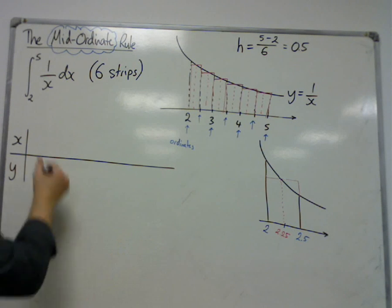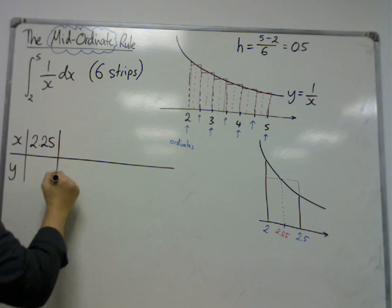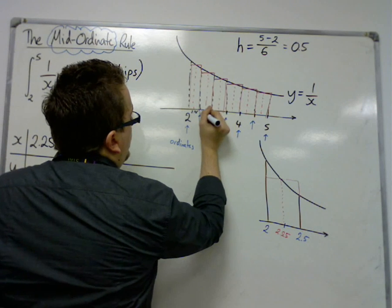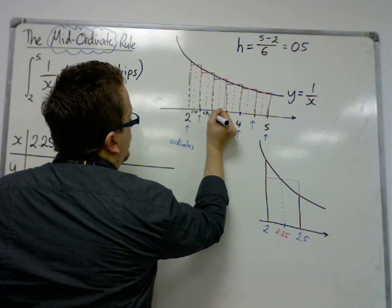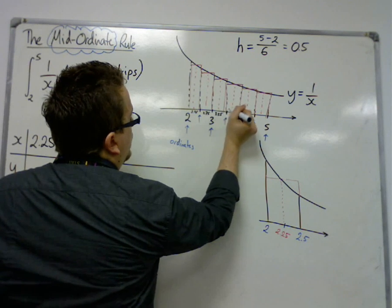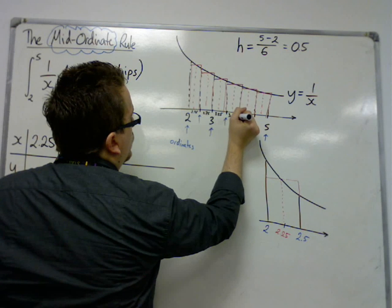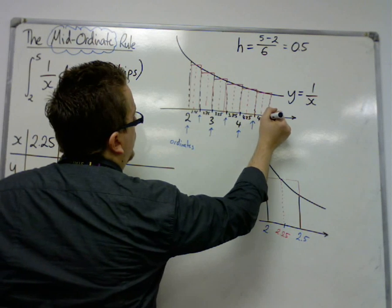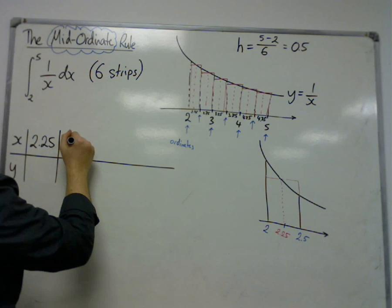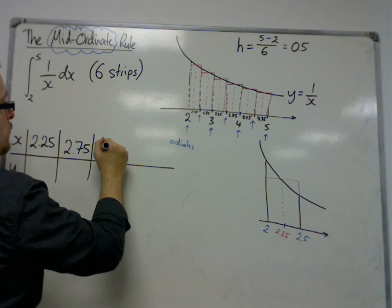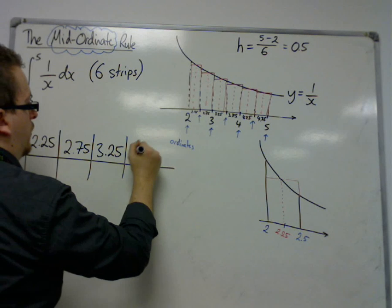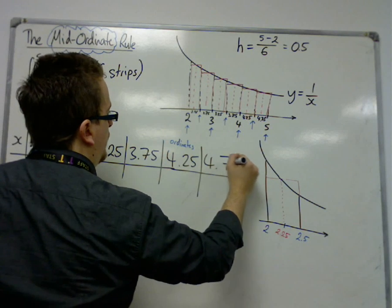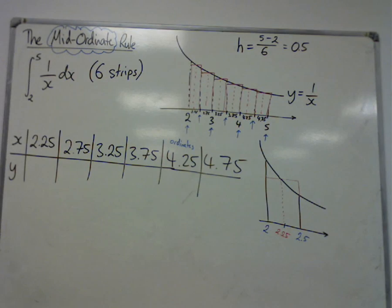Now the x's are going to be your mid-ordinates. We know the first one was 2.25. The next one, if that's 2.25, this is 2.5, so that's 2.75. That's 3, so that's 3.25. That's 3.5, so that's 3.75. That's 4, so that's 4.25. And that's 4.5, so that's 4.75. So we have 2.25, 2.75, 3.25, 3.75, 4.25, and 4.75. These are your mid-ordinates.